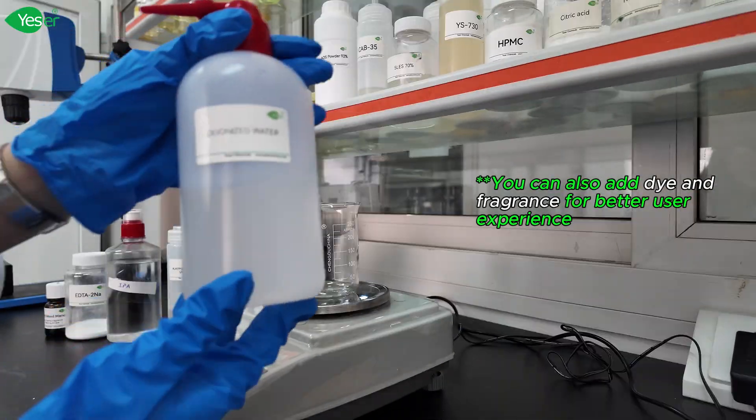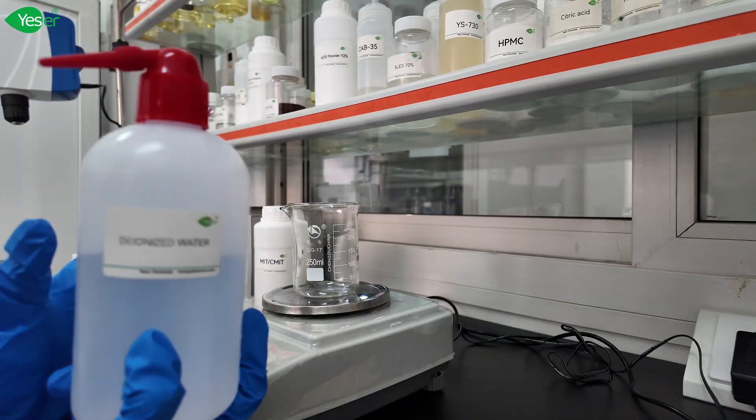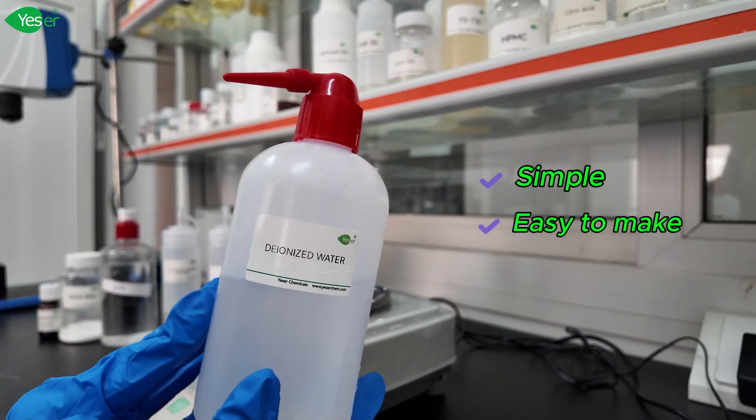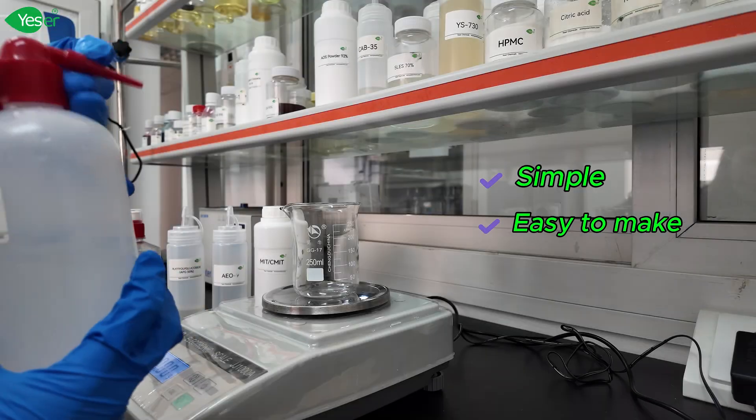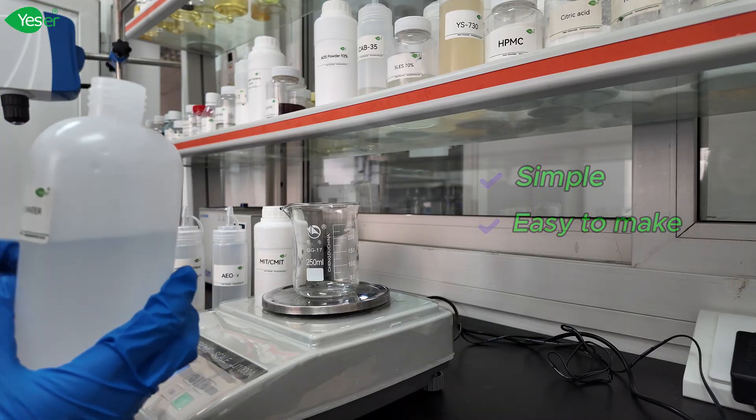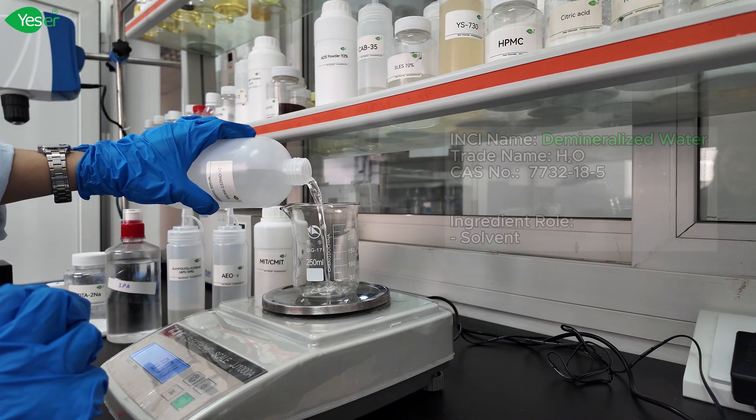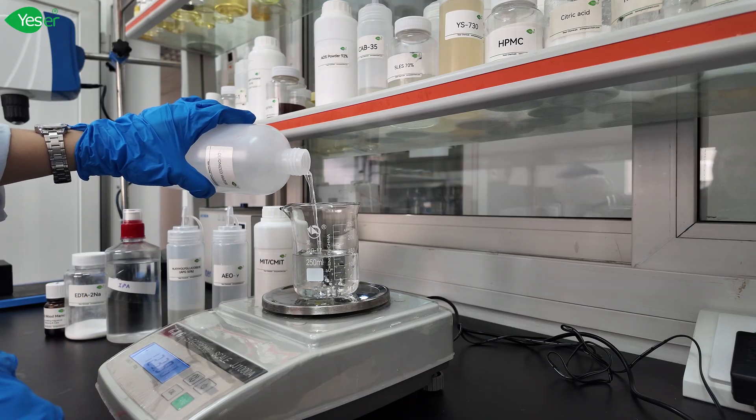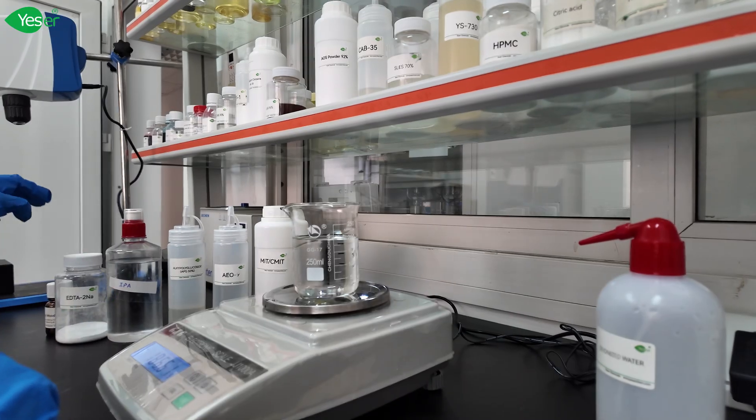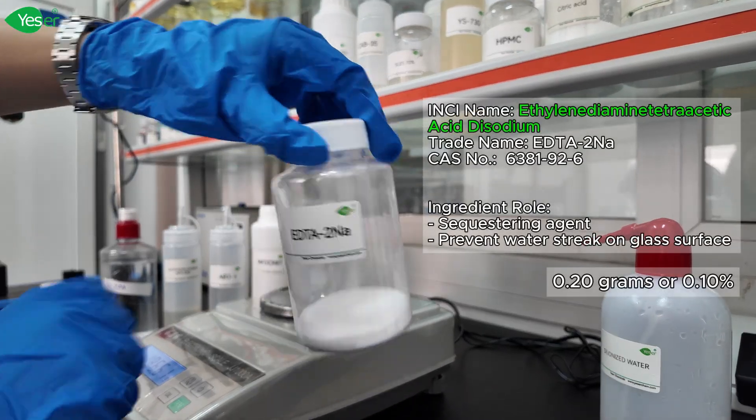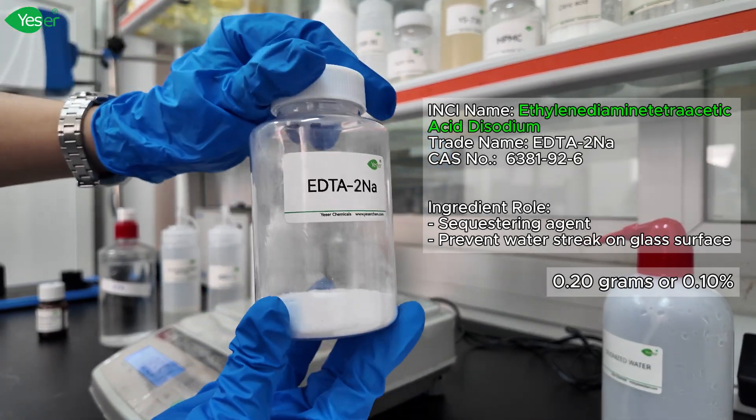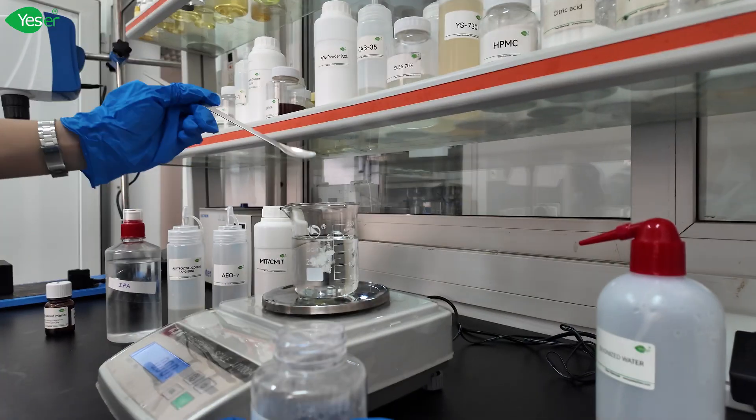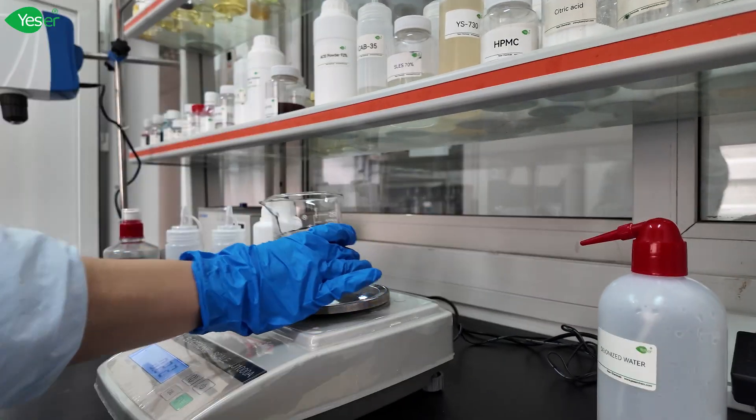This is simple and easy to make so let's proceed. First we will add our solvent, the deionized water. Let's add 186.6 grams or 93.3 percent for our formula. Next let's add our EDTA disodium, our chelating agent. Let's add 0.1 percent or 0.2 grams for our formula. Let's mix.